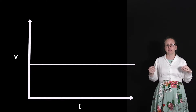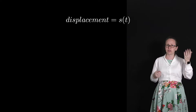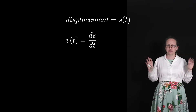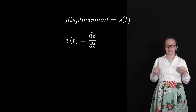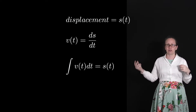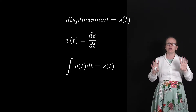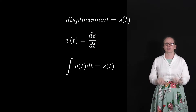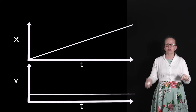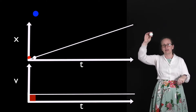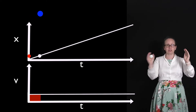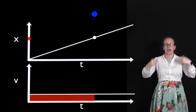A velocity versus time graph is doubly useful — we can get information about both the displacement and the acceleration from it. The displacement is related to velocity through v = ds/dt. The opposite of differentiating is integrating, so we can get the displacement by integrating the velocity, which means finding the area under the curve. So the displacement is just the area under the velocity-time graph. For our dot traveling with constant velocity, the displacement is given by the area of a rectangle, which increases at a constant rate.